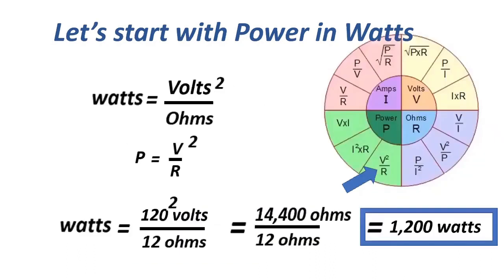The next power formula: P equals V squared over R. That equals 120 squared over 12 ohms, which equals 1,200 watts.